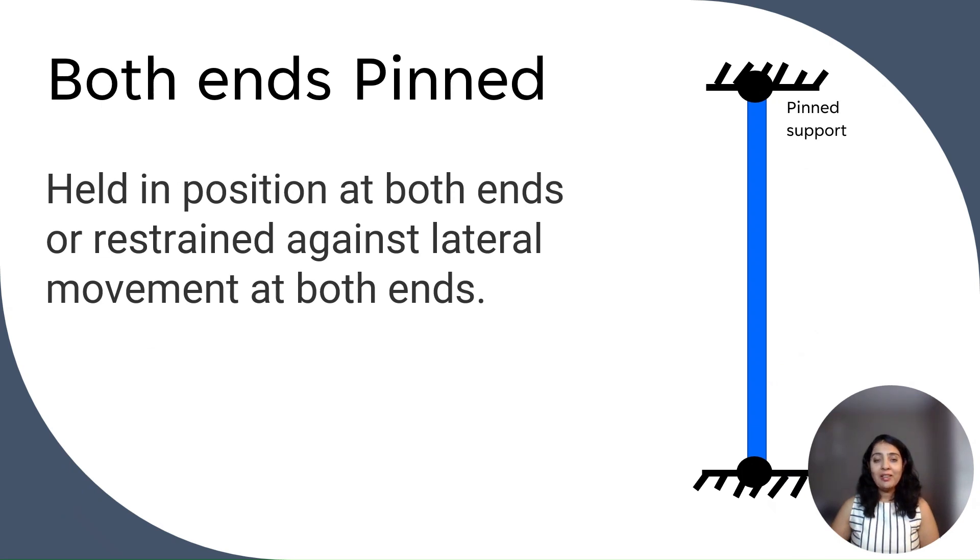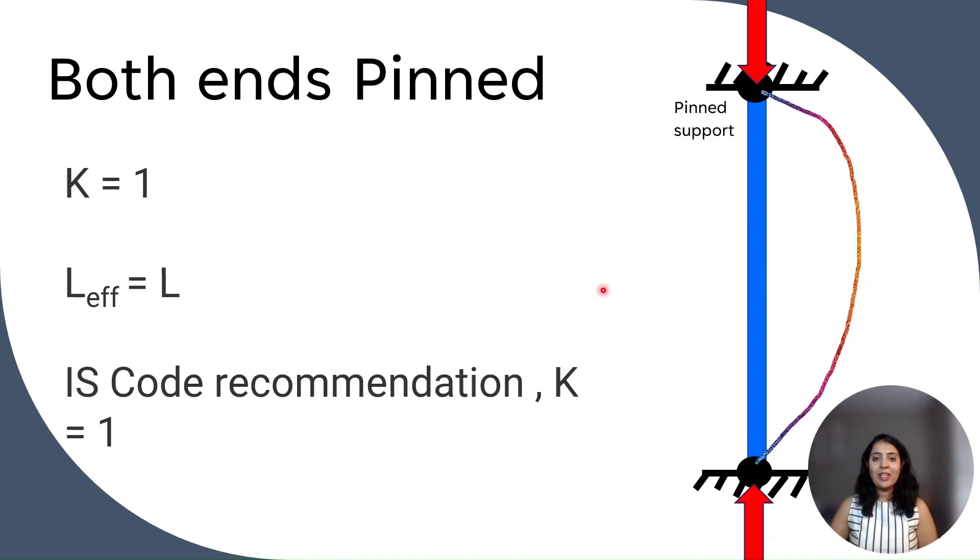So here both ends pinned. So here both ends are restrained against lateral movement but they are allowed to rotate. So here if we apply the load at both ends, the shape of the buckling will be like this, curvature. In this case, effective length factor is 1. The theoretical value is 1, and IS code recommendation is also 1.